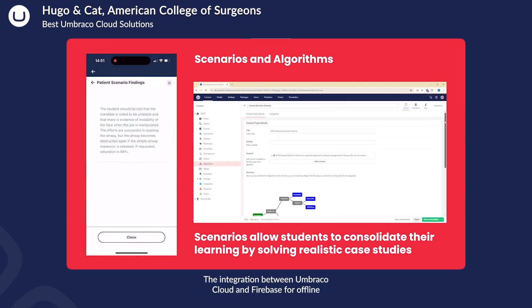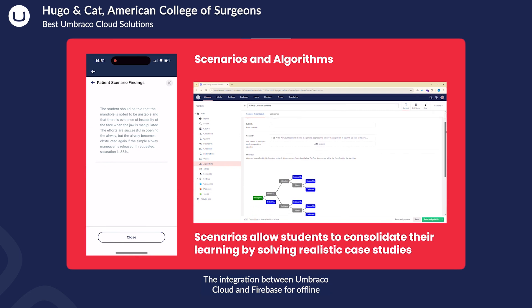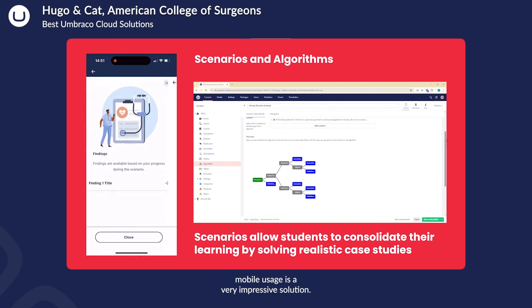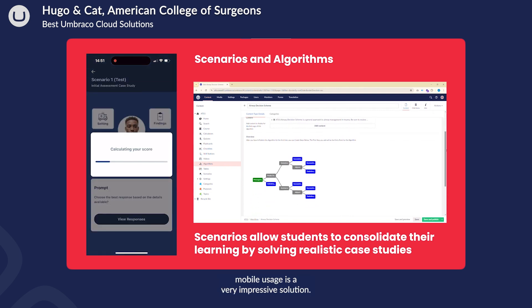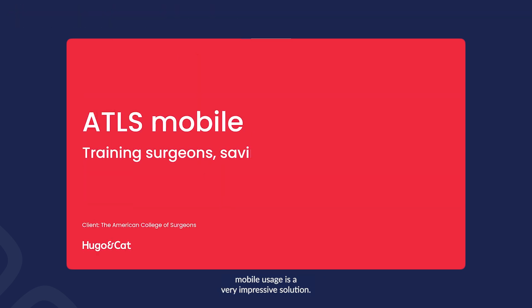The integration between Umbraco Cloud and Firebase for offline mobile usage is a very impressive solution.